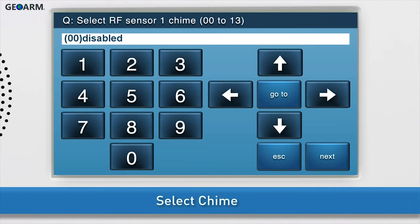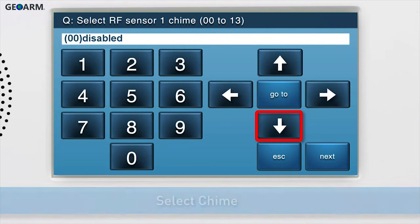Lastly, select the chime. For the smoke, heat, and freeze detector, you will want to leave the chime at the default option, which is disabled. Press the down arrow to go to the Summary page.